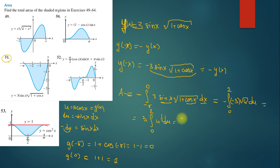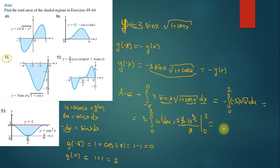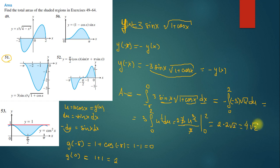Evaluating: 3 · (2/3) · u^(3/2) from 0 to 2. The 3 and 1/3 cancel partially, giving 2u^(3/2). At u = 2: 2 · 2^(3/2) = 2 · 2√2 = 4√2. At u = 0 we get 0. Therefore the area of this region equals 4√2.